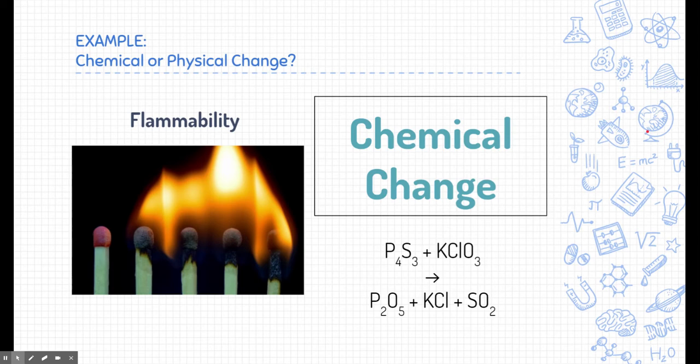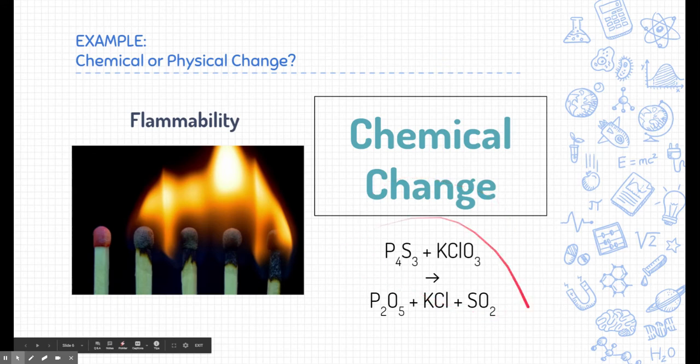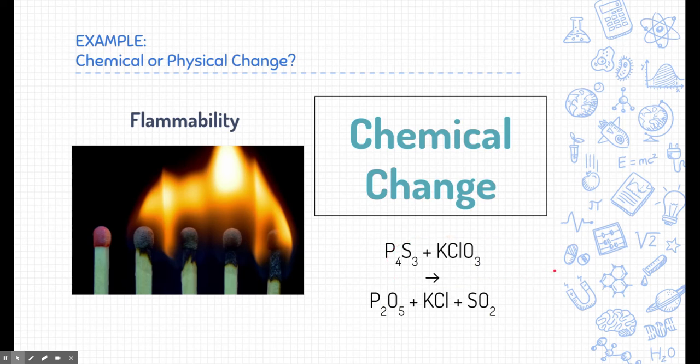Match heads have different formulas. There's different types of matches, such as safety matches and strike anywhere matches. What we're looking at right here is the type of chemical formula for strike anywhere matches. On the tip of the match head, there are typically two substances, tetraphosphorus trisulfide and potassium chlorate. When these two substances get frictioned together, either striking on the match box or on a surface, those substances both react together and cause that match head, that match tip to ignite and cause a flame. Those substances chemically change into new substances that you see down here on the other side of that reaction arrow.